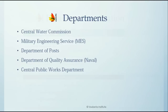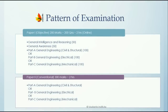Now let's take a look at the pattern of the examination. The examination will be conducted in two papers. The first paper will be objective type — that is, a multiple choice question paper — for 200 marks with 200 questions to be attempted in a time duration of two hours. It will be an online examination with three sections.